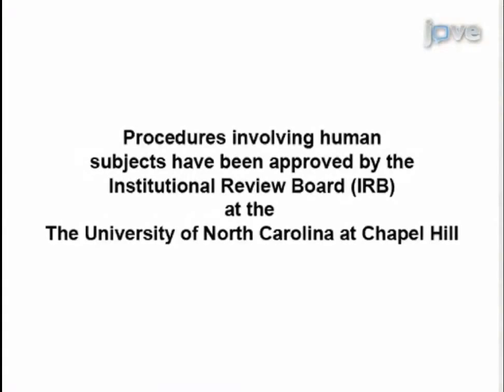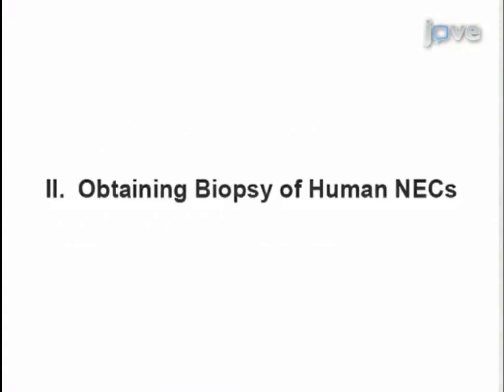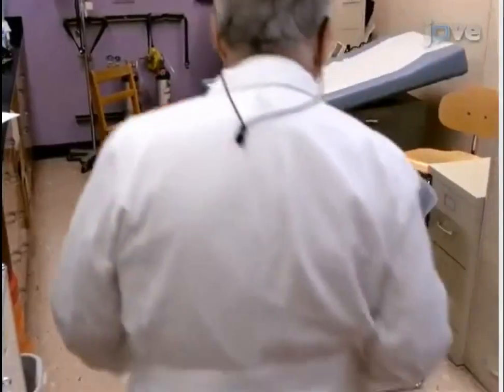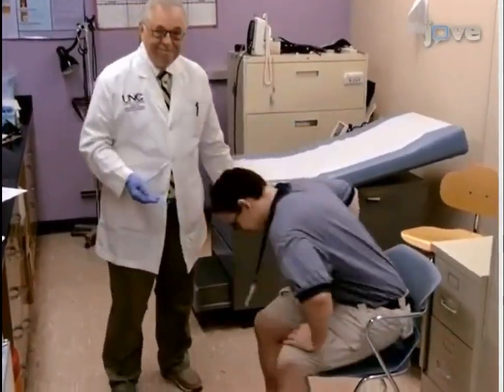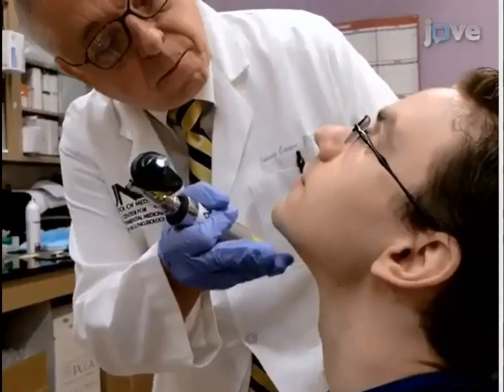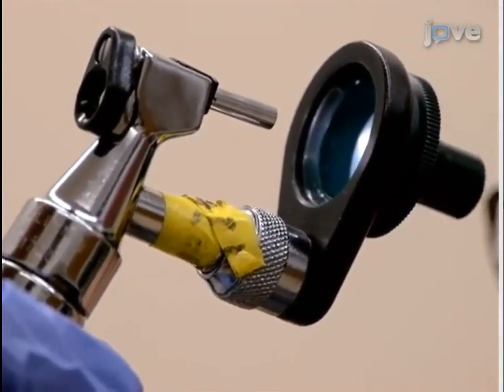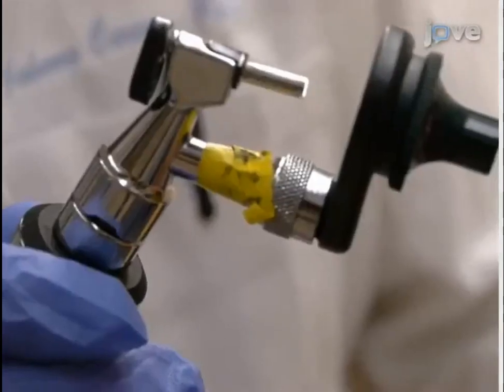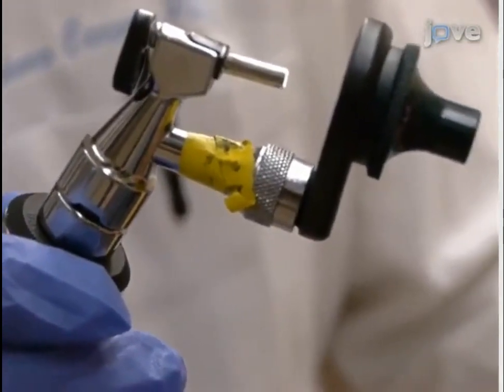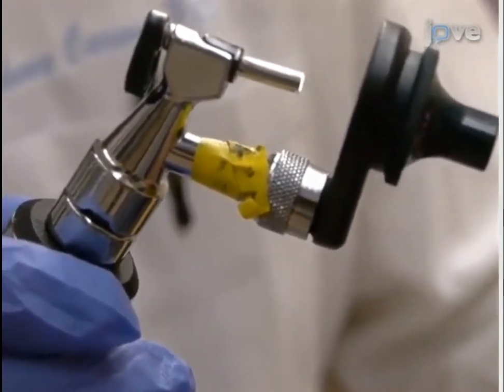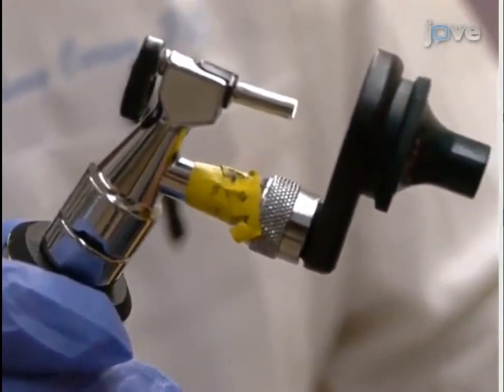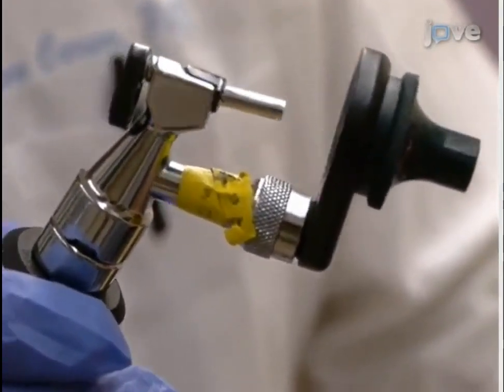In preparation for the nasal scrape biopsy, seat the subject upright in a straight-backed chair with head tilted back slightly. Superficial epithelial cells lining the nasal turbinates will be obtained under direct vision through a nine millimeter reusable polypropylene nasal speculum on an operating otoscope with speculum. This device provides optimal visualization of the nasal turbinates and flexibility of motion.